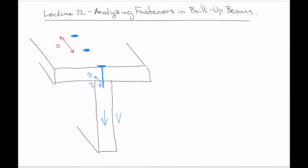It's that shear stress parallel to the length that's acting to shear those nails or screws in half. When we're talking about designing or analyzing fasteners in built-up beams, you can be asking: for a given fastener and spacing, what's the maximum internal shear force the beam can withstand? Or given a maximum shear force, what does spacing need to be? Or what does the strength of each individual fastener need to be?